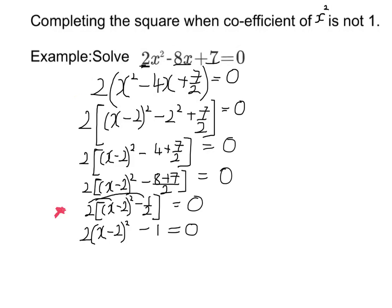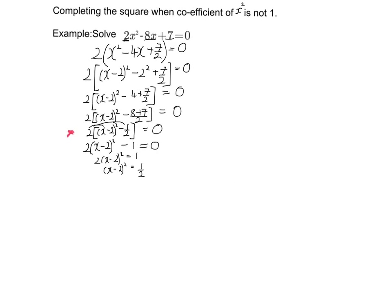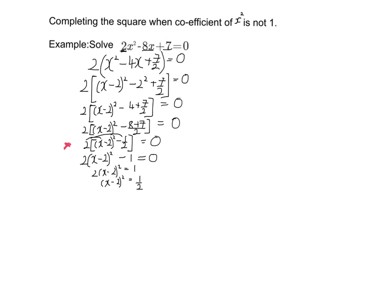Now, to solve this, just like before, I'm going to take this minus 1 over to give me 1. Then I'm going to divide through by this 2, which gives me a half. So I've got x minus 2 squared. I'll take that over to the other side, so I've got the root of one half, positive or negative. So I've got x equals 2 plus or minus root 1 over 2.